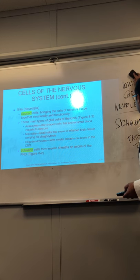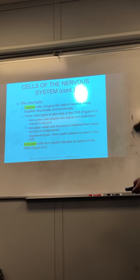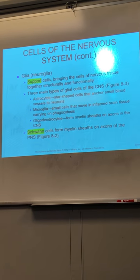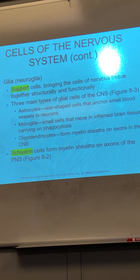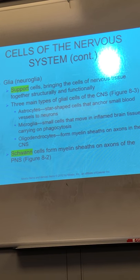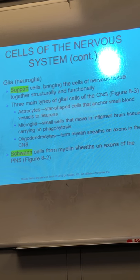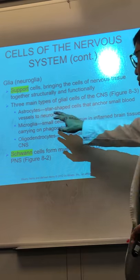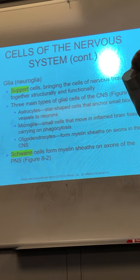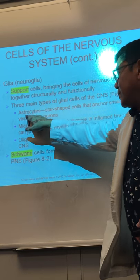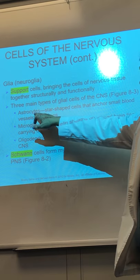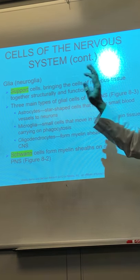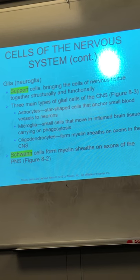Next, the glial cells are the support cells. They are there to support the neurons, but the main cells are the neurons. There are three types: astrocytes — 'astro' represents stars, and 'cyte' means cells — so these are star-shaped cells that anchor the small blood vessels to the neurons.